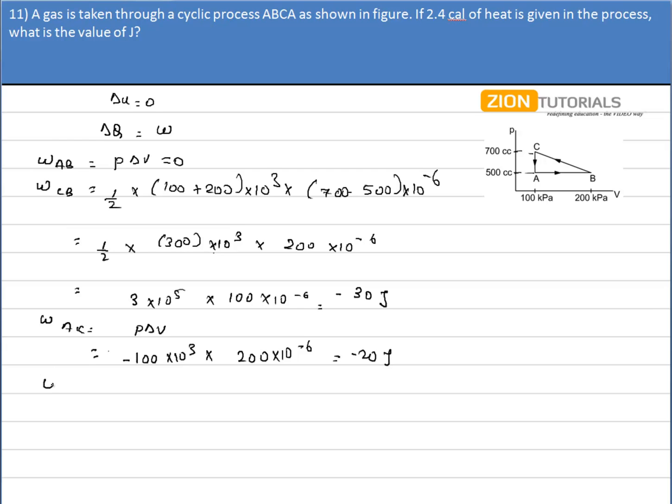So the total work done during the cycle is minus 50 joules. Now, delta Q is equal to work done. I have net heat is 2.4 joules, 2.4 J, that is equal to minus 50. The minus sign can be neglected and we assume that heat is liberated from the system in this process. So it comes out to be J as minus 50 by 2.4, that is equal to 4.17 joules per calorie. That is the answer.